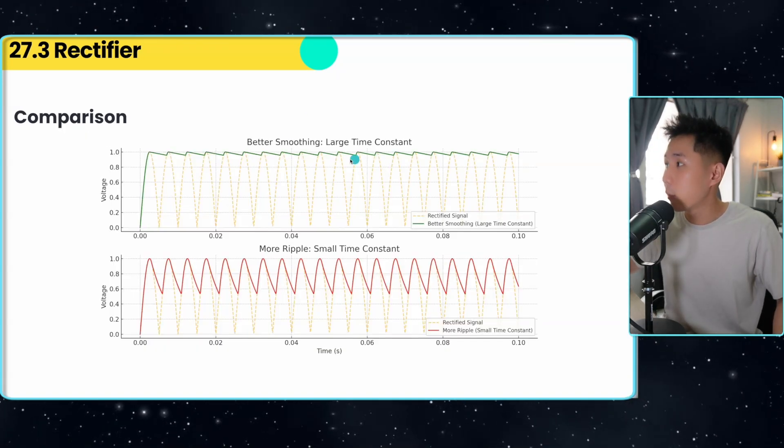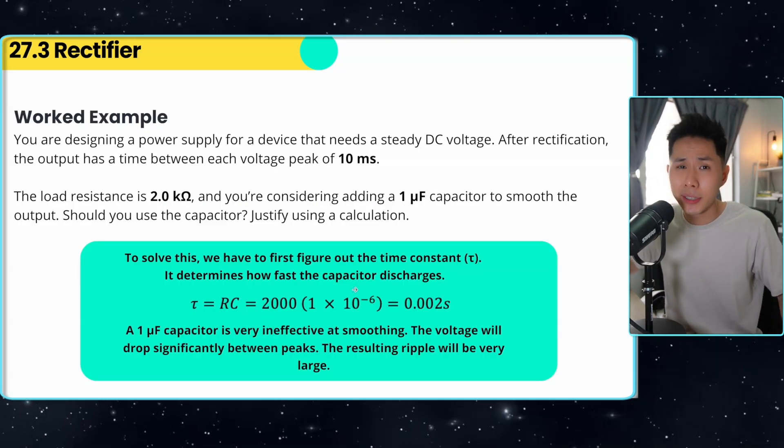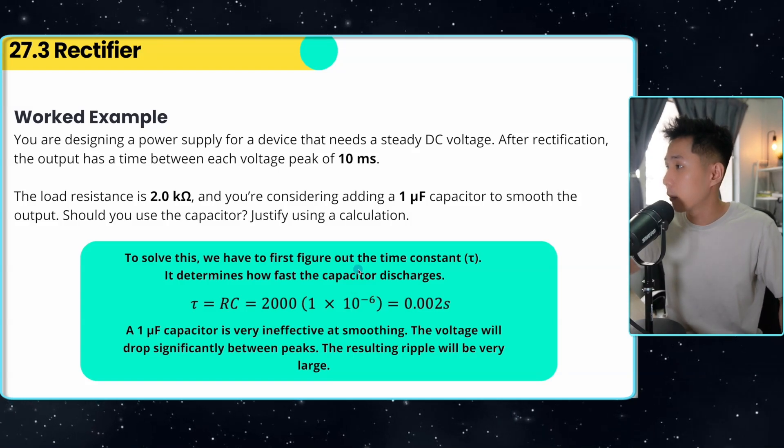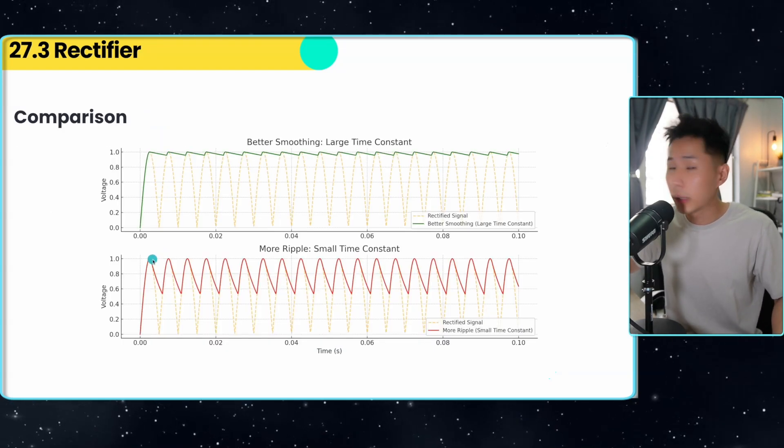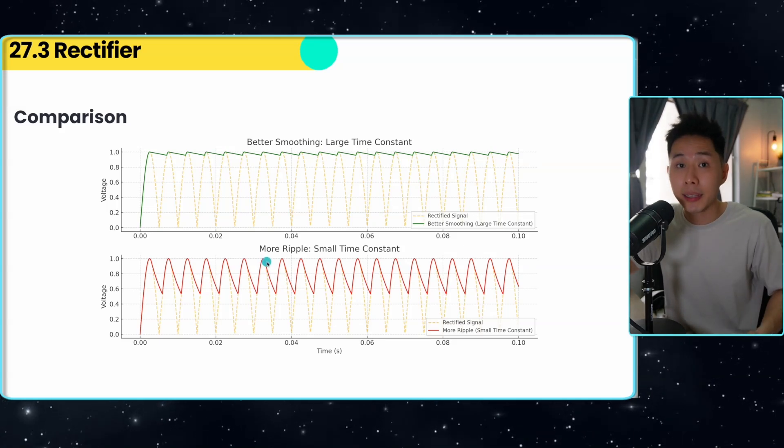So to show you the difference, I have this graph here. This is when you have a large time constant, which leads to better smoothing. But if your time constant is very small, like this example here, that's when your voltage will drop very quickly between the peaks. And as a result, this leads to ineffective smoothing.